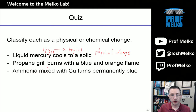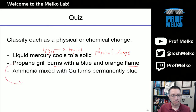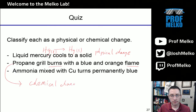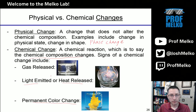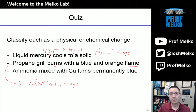The second one: a propane grill burns with a blue and orange flame. Anything that's burning, on fire, flammable — that's chemistry happening. That's a chemical change. The heat released during this burning is evidence of this chemical change.